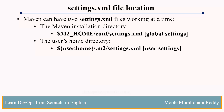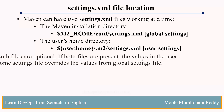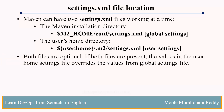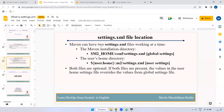If you declare both sides, the global settings will take higher priority. Even if you declare user level settings, when you also declare global level settings, global will take high priority. I will show you more when we configure Nexus in Maven, you will get a better idea.